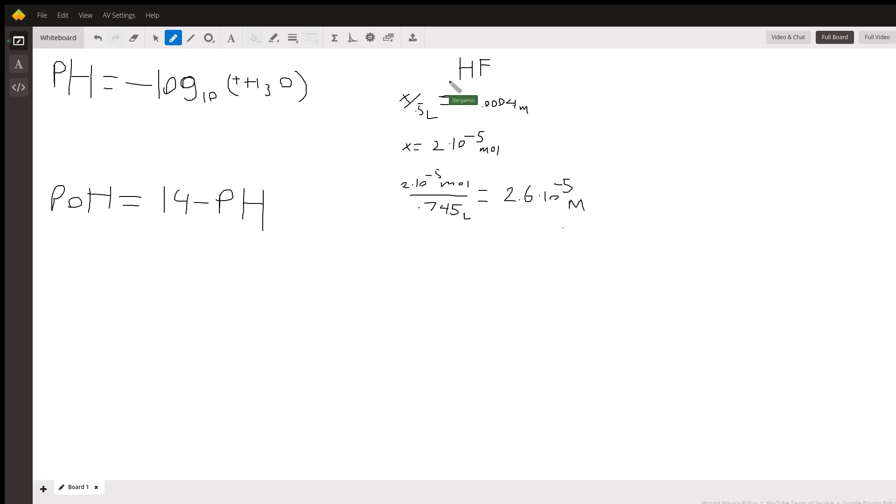It's a strong electrolyte, so we need our molarity because this is in concentration. First we've got to find the amount of moles that are in our initial, which is 2 times 10 to the negative 5th, plug it into our new amount of milliliters, which gives us 2.6 times 10 to the negative 5th.